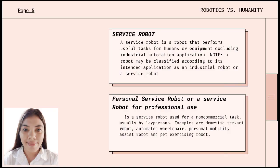A service robot is a robot that performs useful tasks for humans or equipment, excluding industrial automation applications. A robot may be classified according to its intended application as an industrial robot or a service robot. Service robots help humans by performing tasks that are dirty, dull, distant, dangerous, or repeated. They are typically self-contained and controlled by an onboard control system with manual override options.